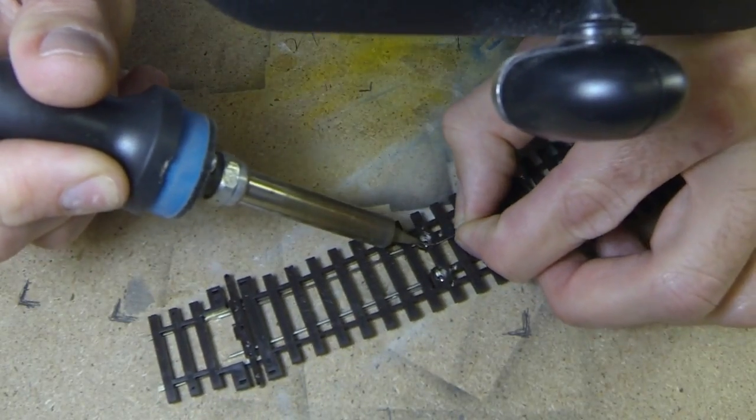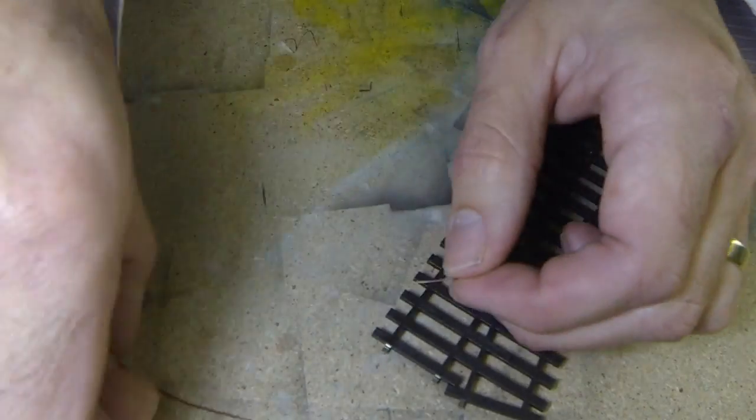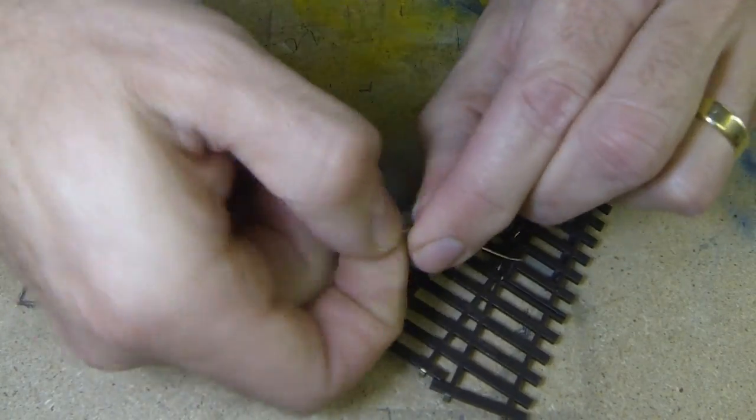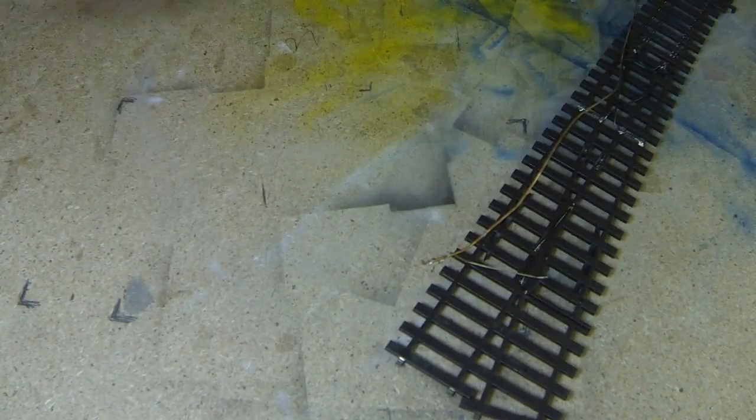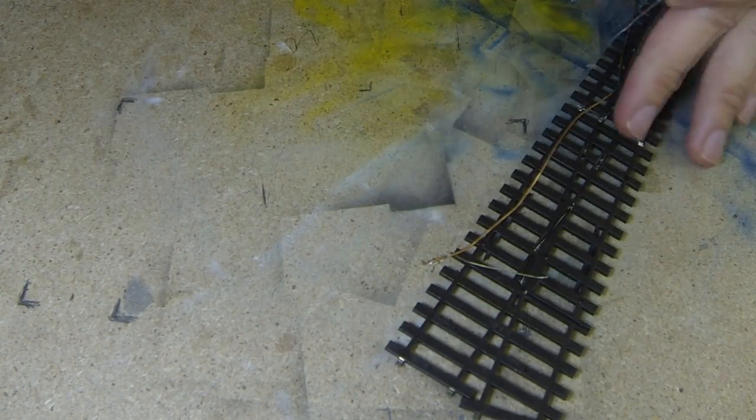Once this is done, I solder an extension wire onto the wire that is connected to the frog. I use uninsulated copper dropper wires, but you can use whatever wires you use for your dropper wires or turnout wiring.